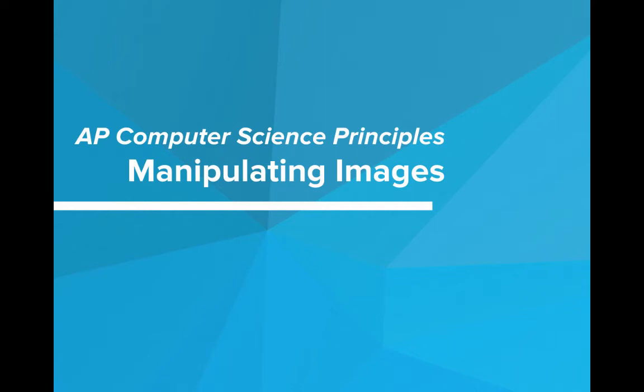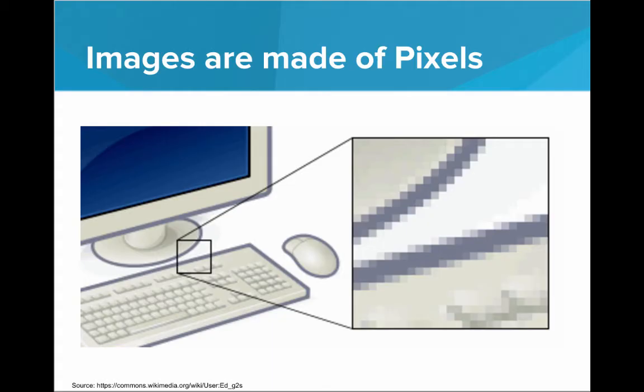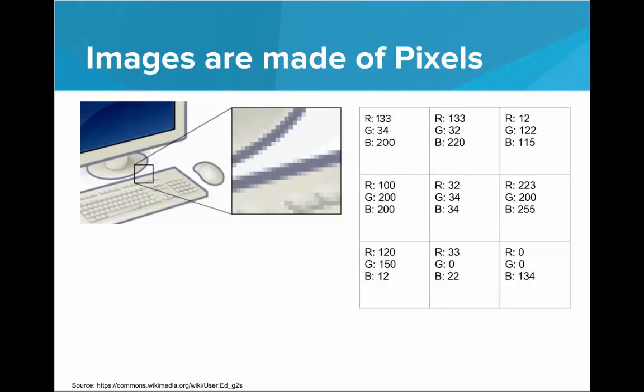Hi. In this video, we'll be talking about manipulating digital images. We've seen that images are made of pixels. Pixels are the tiny building blocks of any image you see on your screen. They're tiny squares that each have their own color, encoded by the RGB color encoding scheme.